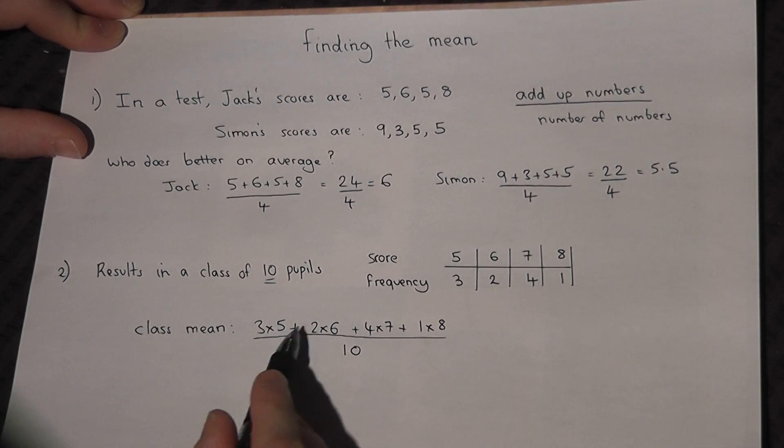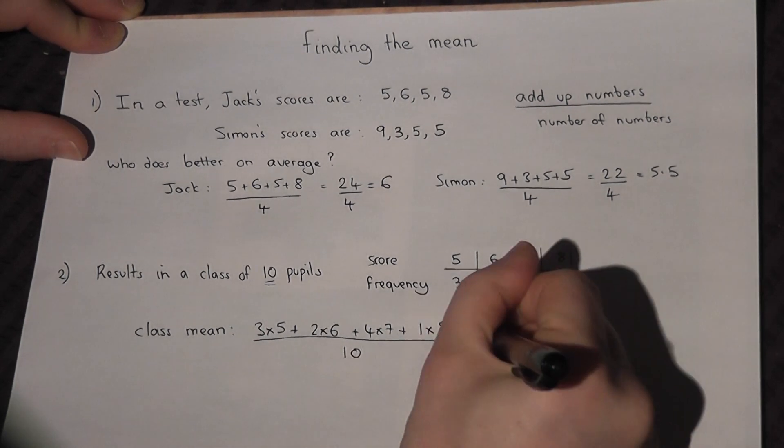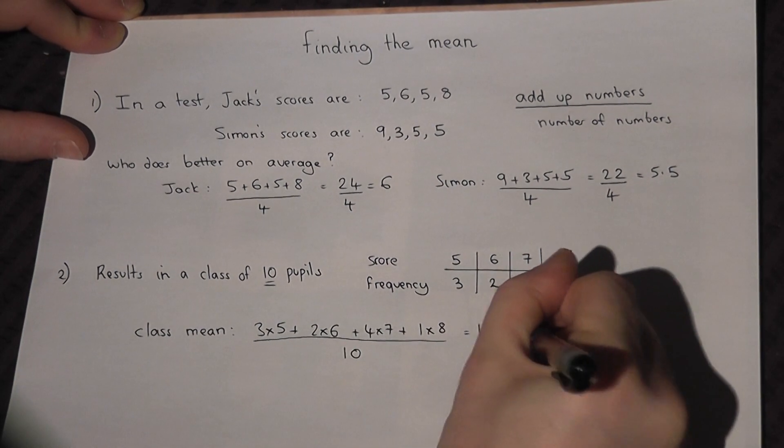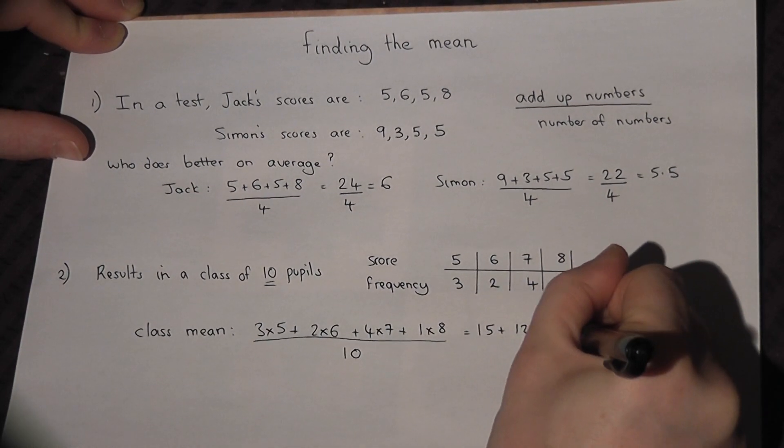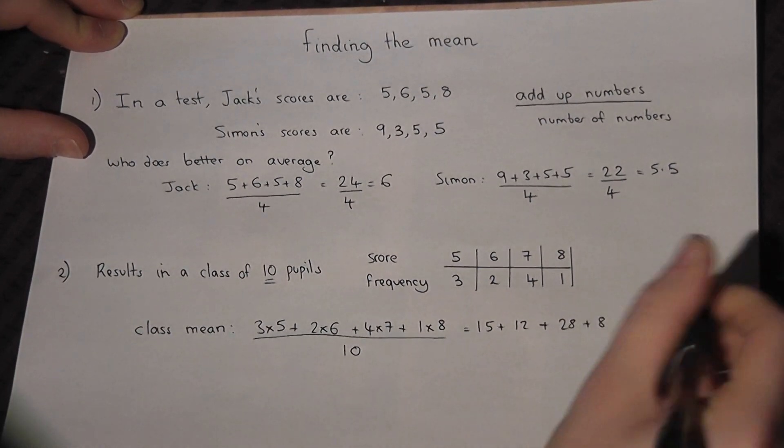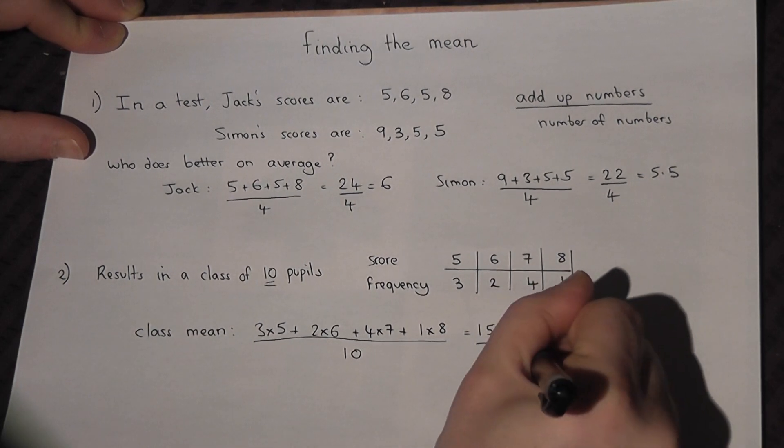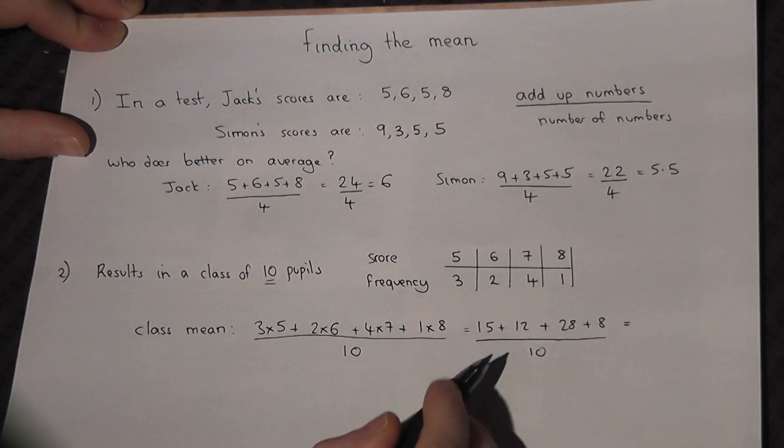We then work out each part separately. So 3 times 5 is 15. 15 plus 12 plus 28 plus 8, all divided by 10. And then add it together.